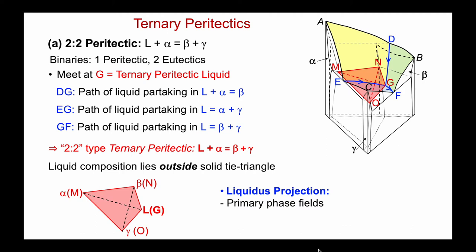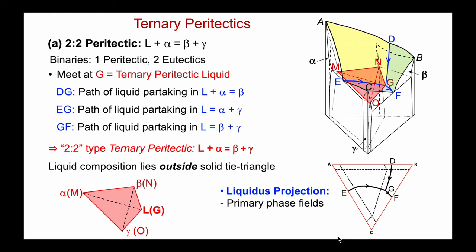Let's look at the liquidus projection. Here are the various liquids coming out of the binaries: out of AB downhill, out of AC downhill, meeting at G, and then out of G going down into the BC system is the other eutectic valley GF. I've used hatch lines for the solid compatibilities, and translating the primary phase fields from the space diagram: in yellow, the alpha primary phase field; here's beta; and down below is gamma.